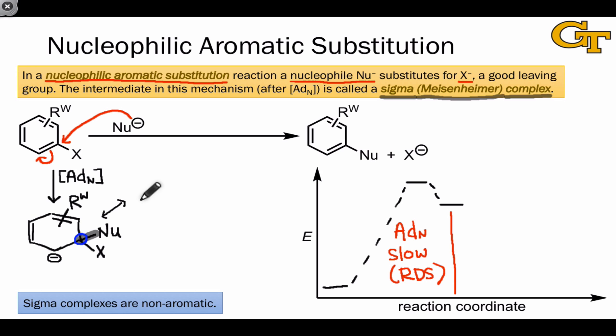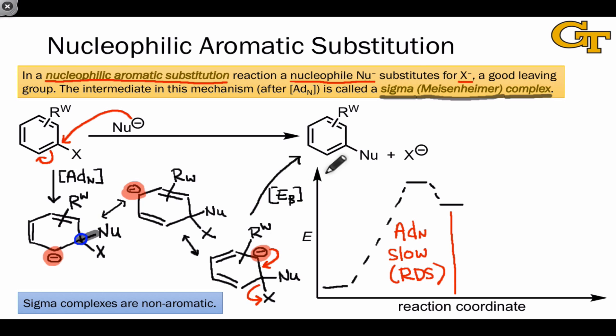The sigma complex intermediate has a few different resonance forms that show the delocalization of the negative charge over the now 5-atom pi system in this molecule. There are likely more than just the three I've drawn here if the electron withdrawing group is positioned appropriately to share the negative charge. What these three resonance forms in particular show us is that the negative charge is predominantly located on the ortho and para positions. And so when the withdrawing group is positioned ortho or para, it's especially effective at stabilizing the negative charge. The elementary step that follows is a beta-elimination step that expels the leaving group as its conjugate base, X-, and because this step restores aromaticity in the product, it's heavily downhill and heavily favored.